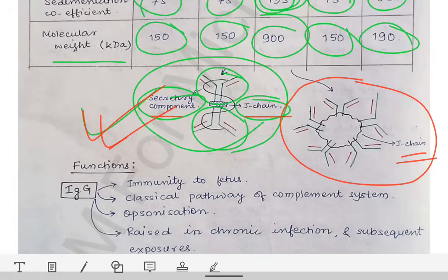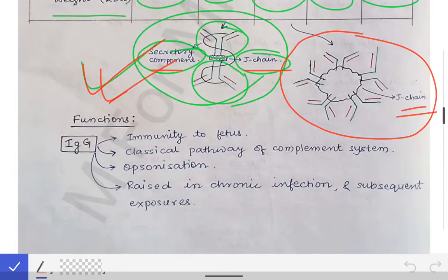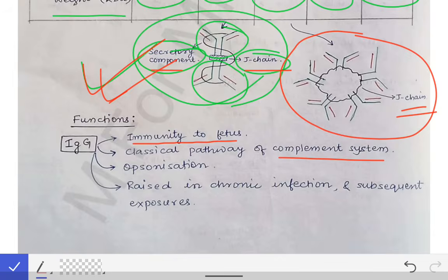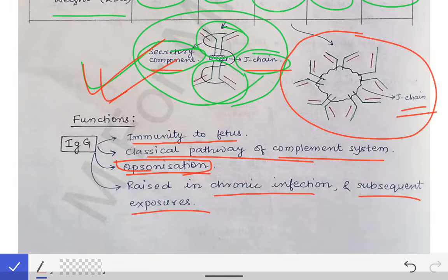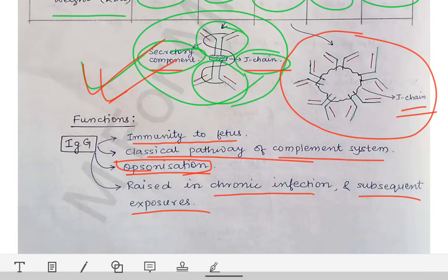Now come to the functions of different antibodies. The function of IgG: since it can cross the placenta, it provides immunity to the fetus. IgG also helps in the classical pathway of complement activation, helps in opsonization, and is raised in chronic infection and subsequent exposures — as seen in the secondary immune response where there is a rise in IgG, while in primary immune response there is an IgM rise.